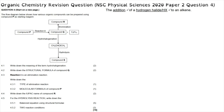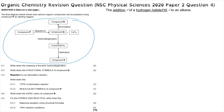The organic reaction section of the chemistry paper is question four, which reads: the flow diagram below shows how various organic compounds can be prepared using compound P as the starting reagent. It's normally a good idea to familiarize yourself with this diagram before going on to the questions. Compound P starts as a certain substance and goes through a reaction that forms two different organic compounds.